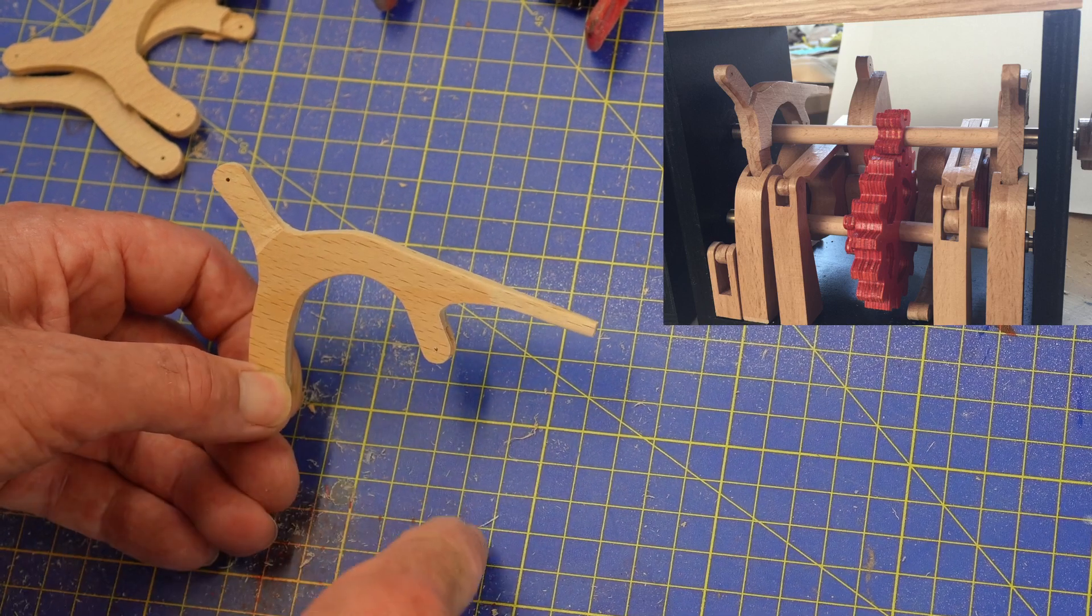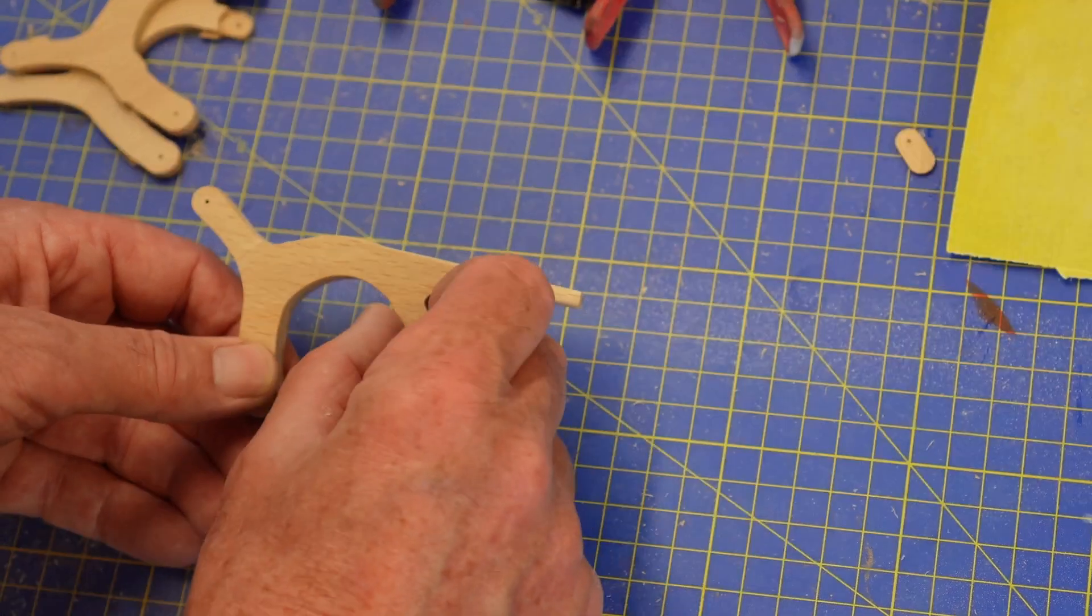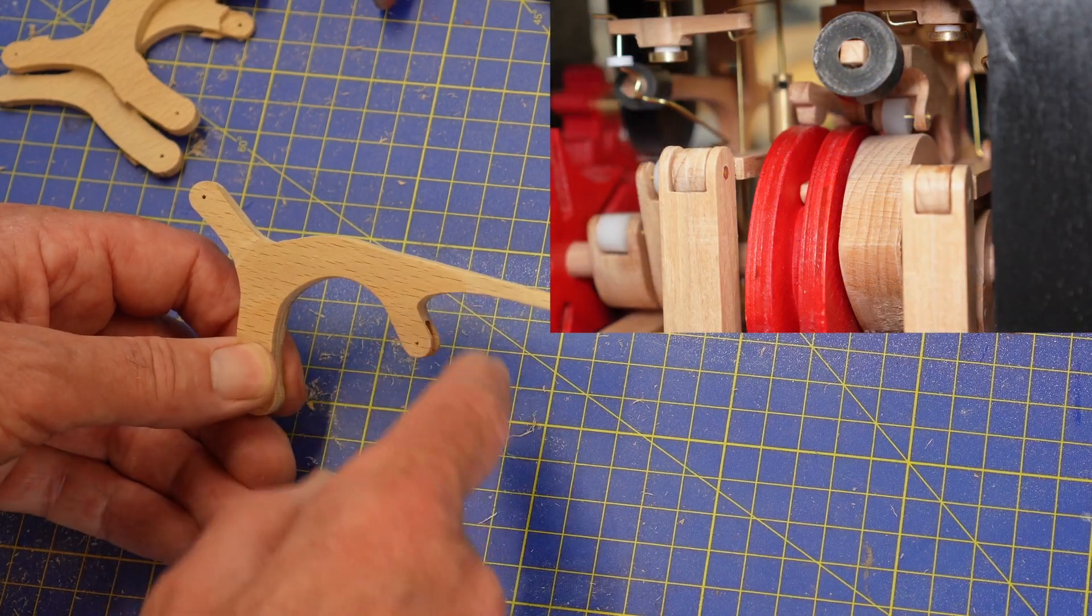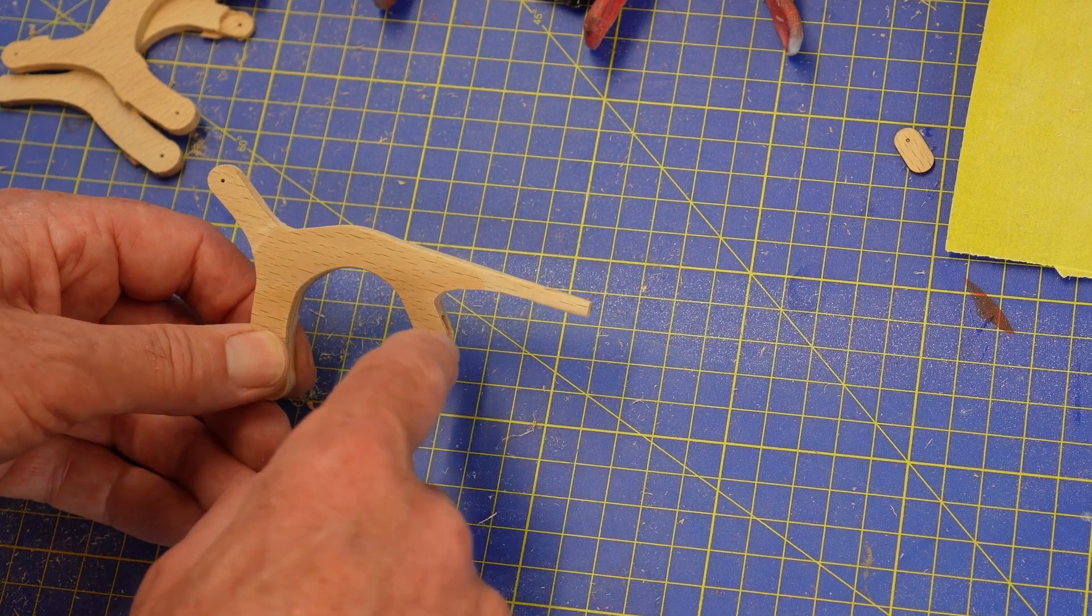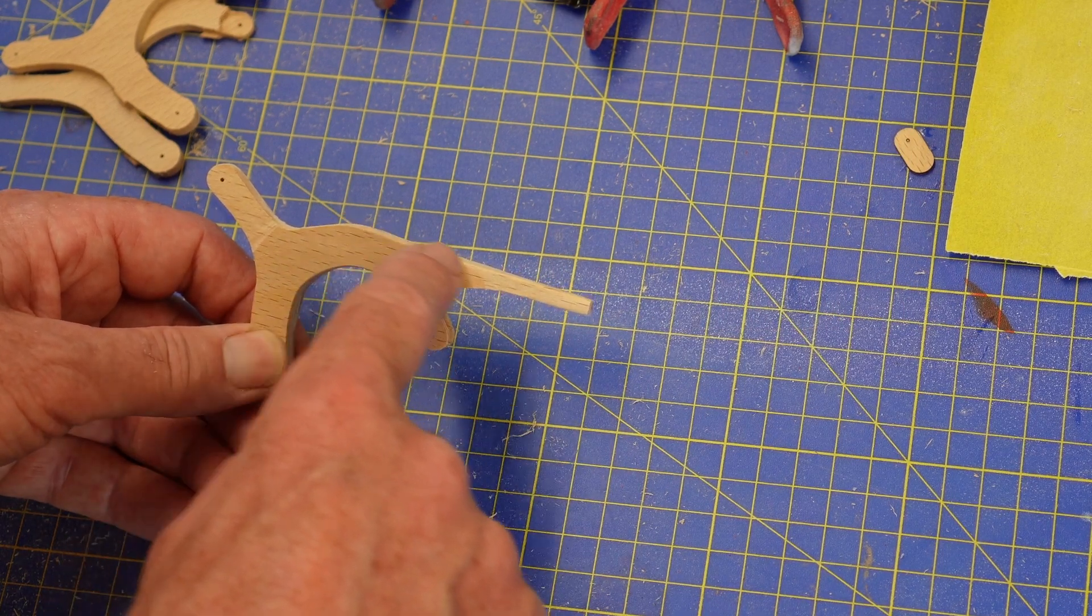It then has a protruding part there because the cam wants to ride up and down over the cam without scraping against it. A roller fits in this part and then on the end we have a weight.